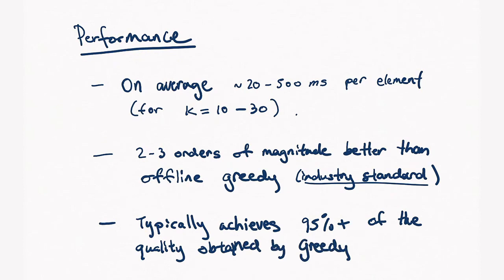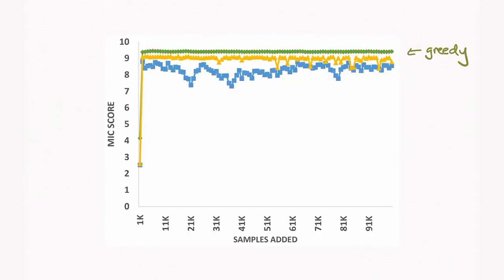So I'll end the talk with a performance graph of our algorithm on the Yahoo front page dataset. On top, we have greedy, and just below it we have our algorithm. The blue line is another baseline that we show in the paper. As you can see, the streaming algorithm we came up with is extremely close to that of greedy.